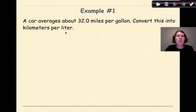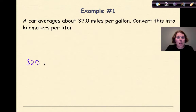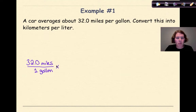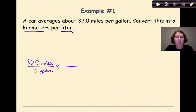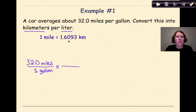A car averages about 32 miles per gallon — convert this into kilometers per liter. The first thing I always do is write out my given: 32.0 miles over one gallon, because miles per gallon means miles per assumed one gallon. I'll put a multiplication sign and a line. The next thing to consider is what to convert first. I'm going from miles per gallon into kilometers per liter, so I'll start with miles to kilometers. I need a conversion: one mile is equal to 1.6093 kilometers.